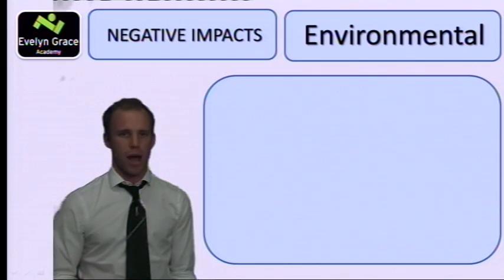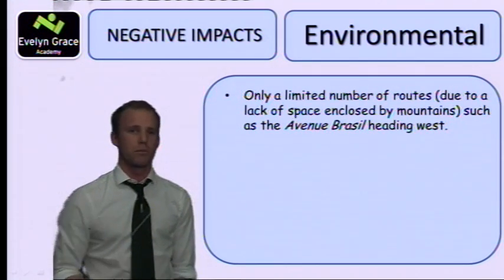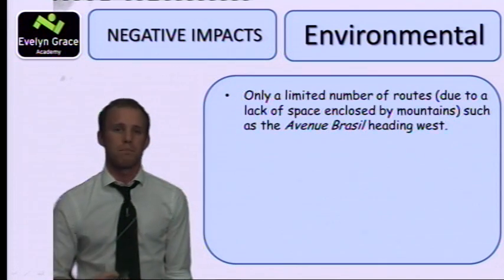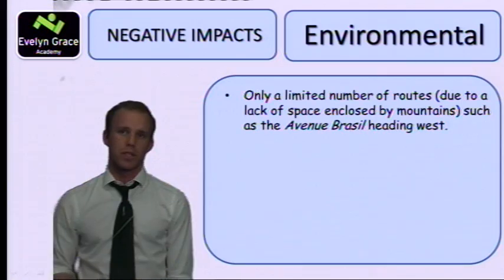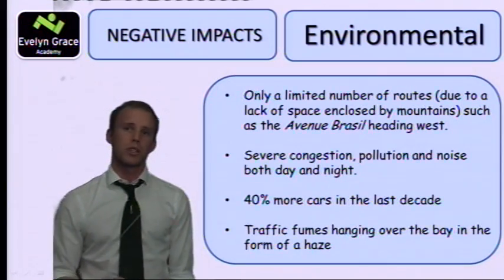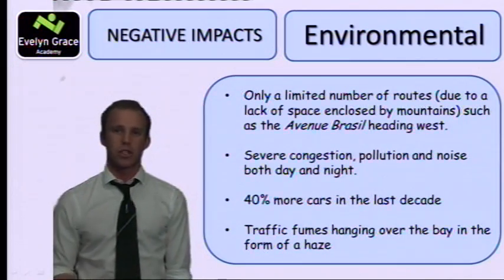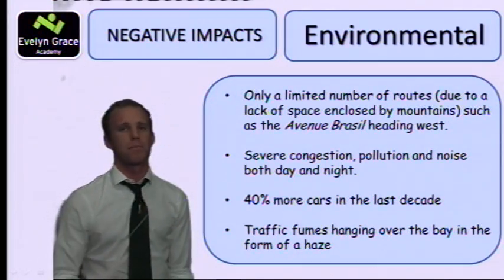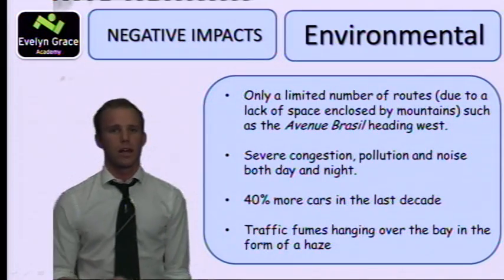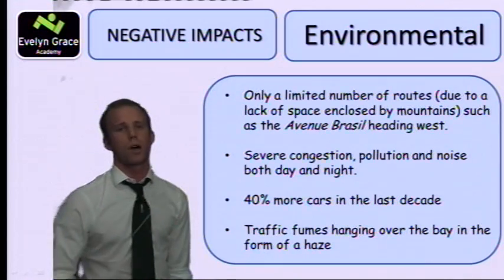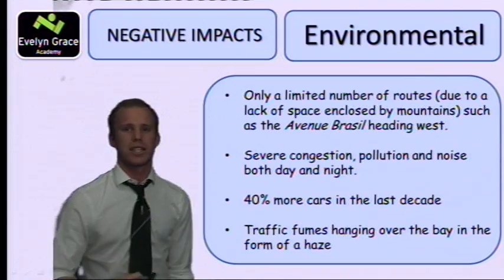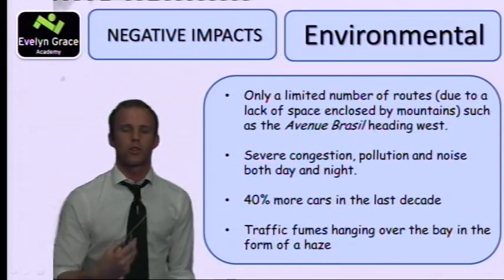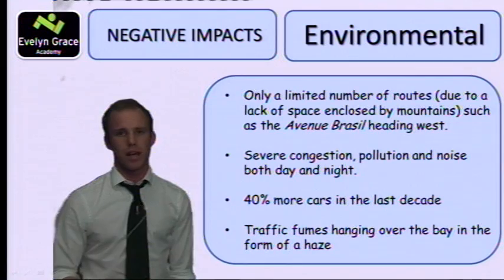The environmental impacts: there are a limited number of routes in and out of Rio because it's mountainous and you can't build roads on difficult terrain, so there are only two to four major routes out of Rio — for example, Avenida Brasil heading west. Most cars go through those major routes, causing severe pollution and congestion both day and night. There are 40% more cars in Rio than in the last decade, and traffic fumes are trapped in the bay, causing health and environmental problems.